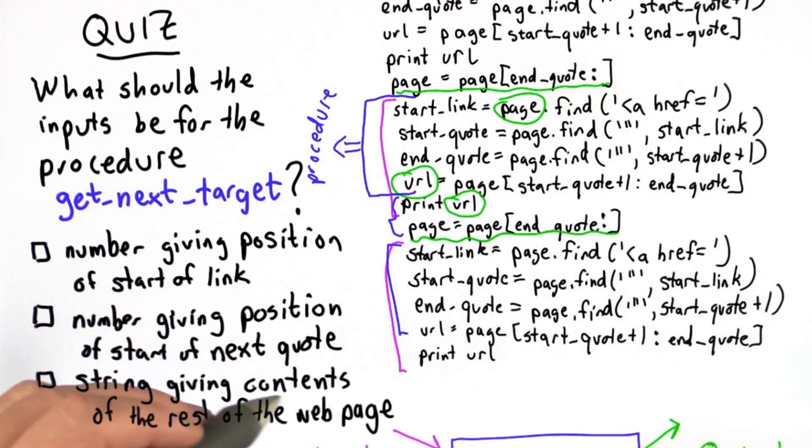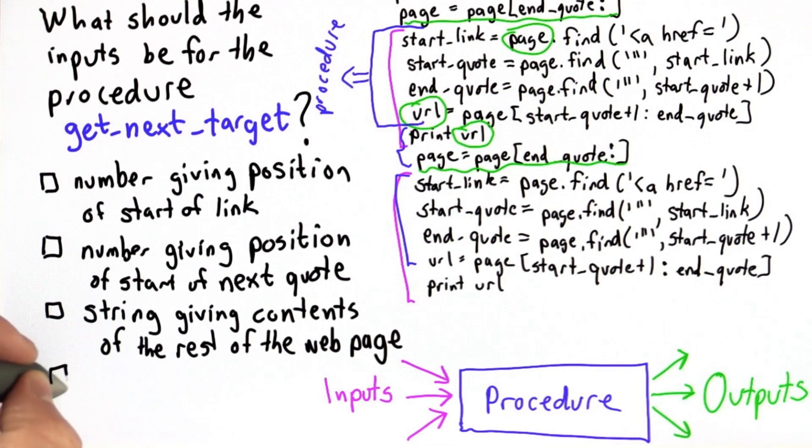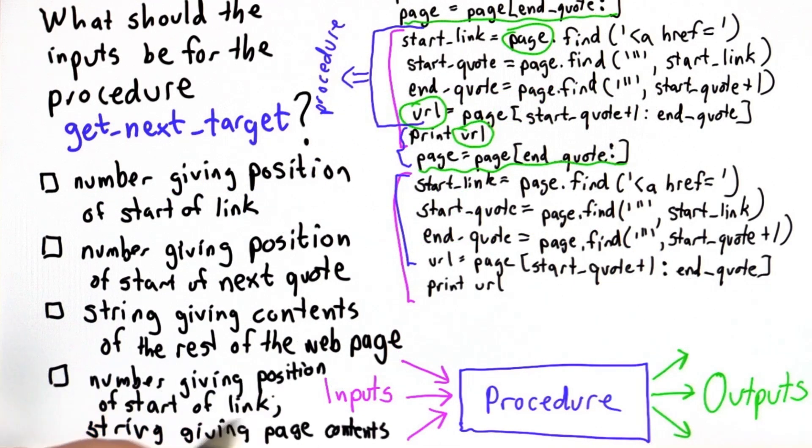The input could be a string giving the contents of the rest of the web page. Or for the final choice, we could have two inputs: a number giving the position of the start of the next link, and a string giving the contents of the page.